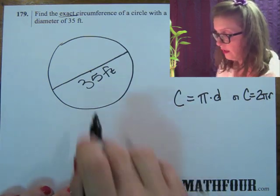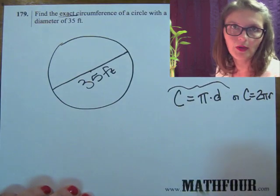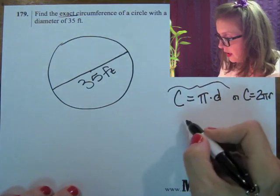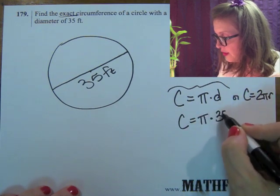Well, guess what? We have D, so let's use this one. Why bother with the other one? So the circumference is pi times the diameter, which is 35 feet.